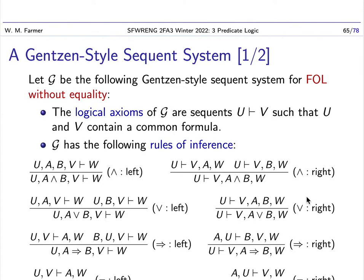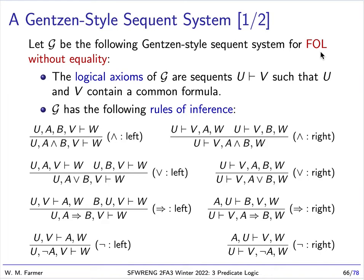So last time we presented a Gentzen-style sequent system for FOL, but I failed to emphasize the fact that it was for FOL without equality. We don't have any machinery for reasoning about equality. And remember, equality is basically a logical constant in our logic in FOL.